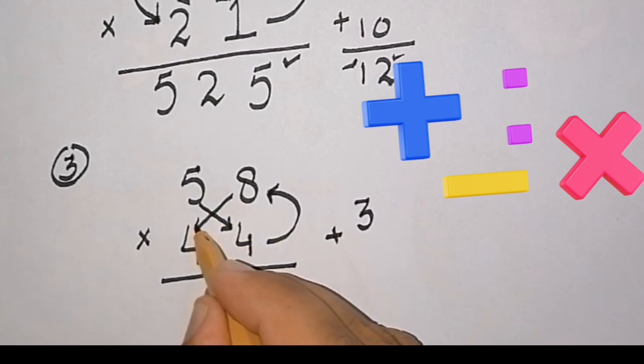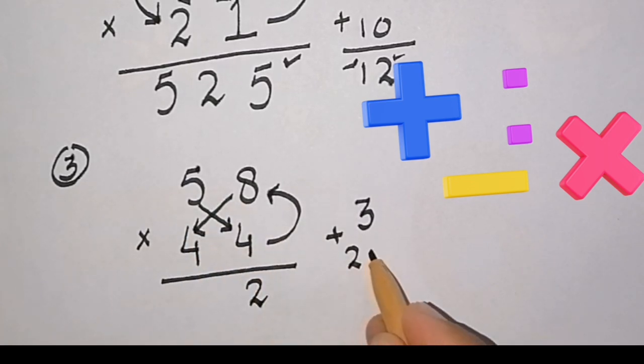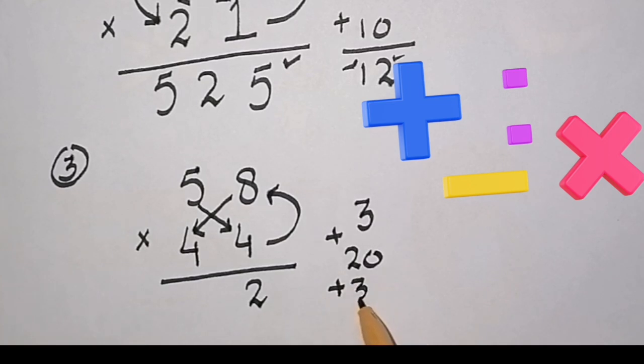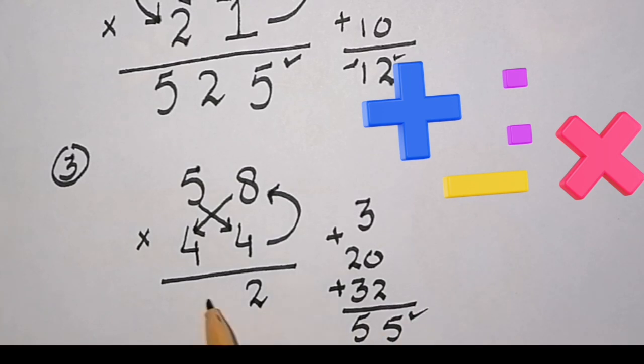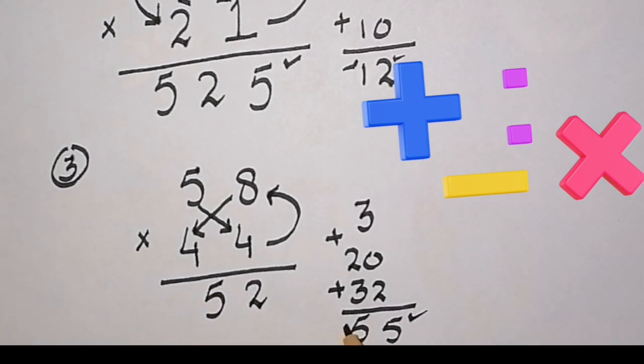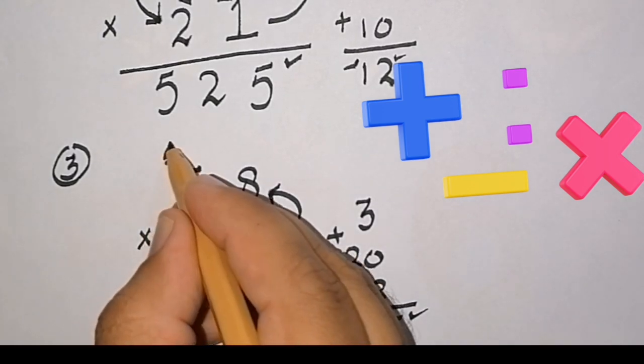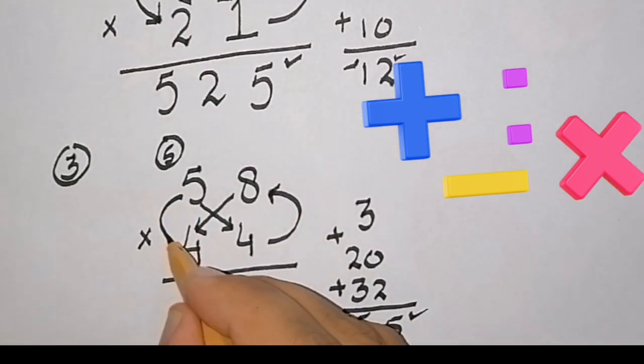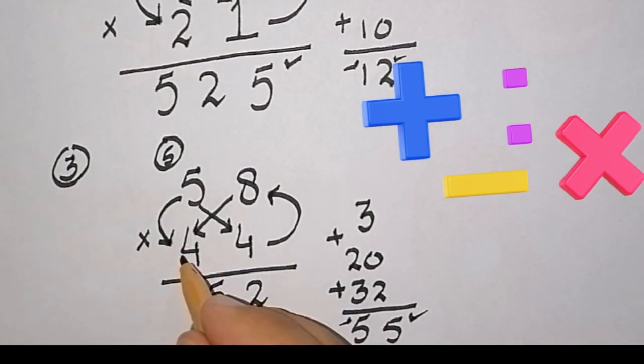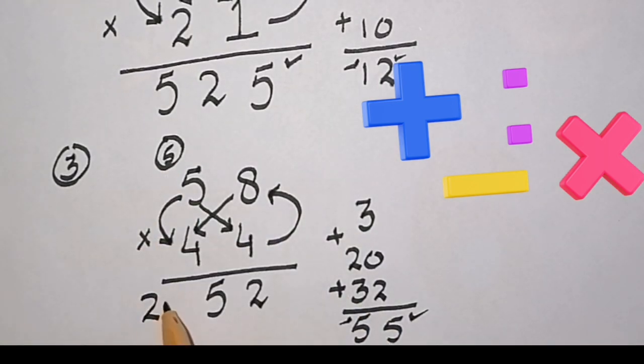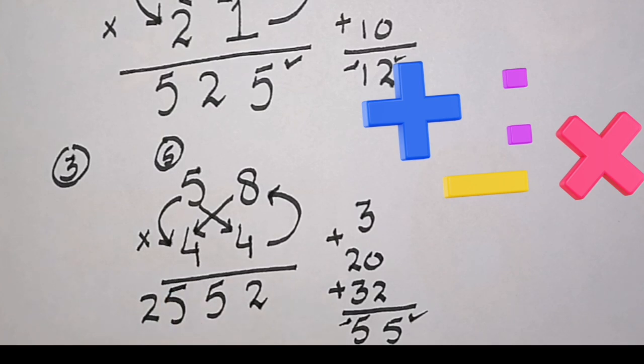Cross multiply the two digits: 5 multiply 4 is 20, 8 multiply 4 is 32. Add these, it gives us 52, plus the carried 3 equals 55. We will write 5 here and carry 5. Now multiply 5 with 4, that is 20 plus 5 equals 25. So this is the answer.